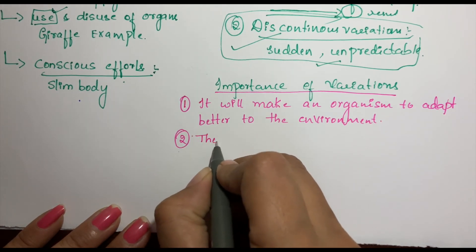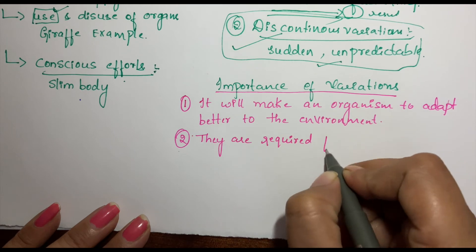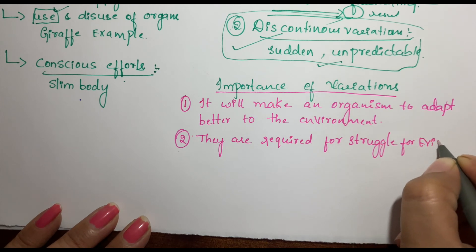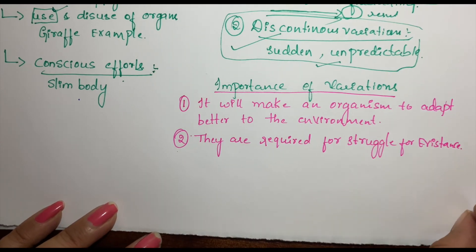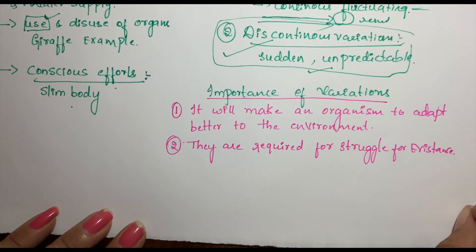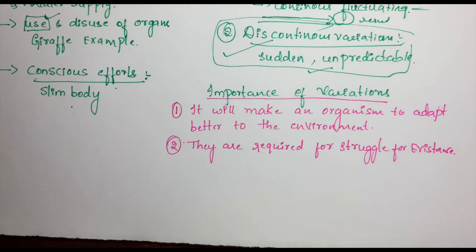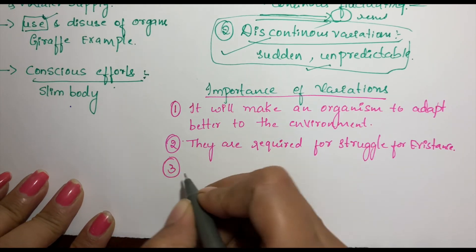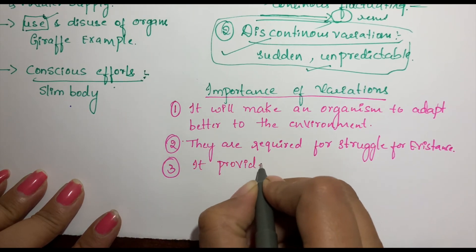The second importance is that variations are required for the struggle for existence. As variations arise, organisms become better and better, and we know that in a group, whichever organism has better characteristics will survive. Third, variations provide individuality.